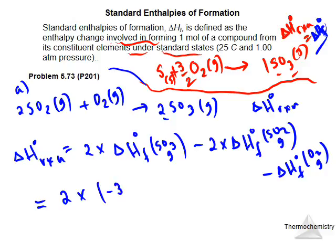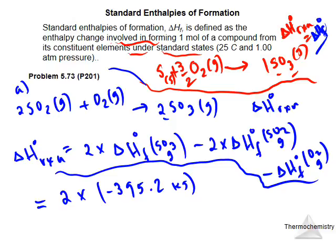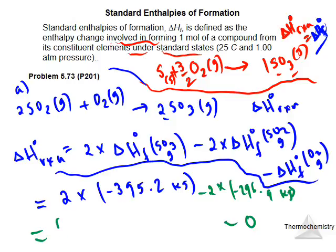Substituting the values: 2 × (−395.2 kJ) minus 2 × (−296.9 kJ) minus zero. Note that for pure elements under standard state, delta H-f is zero. After doing the arithmetic, this gives the final heat of reaction in kilojoules. Make sure you apply this same method—products minus reactants, multiplied by the number of moles—for all similar problems.